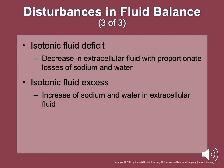Isotonic fluid deficiency involves decreasing extracellular fluid with proportionate losses of sodium and water. It is most commonly caused from fluid loss due to heat exhaustion from sweating. Isotonic fluid excess involves proportionate increases of sodium and water in extracellular fluid. Common causes include acute kidney and heart failure, where the body is not able to eliminate that edema through voiding or other means.